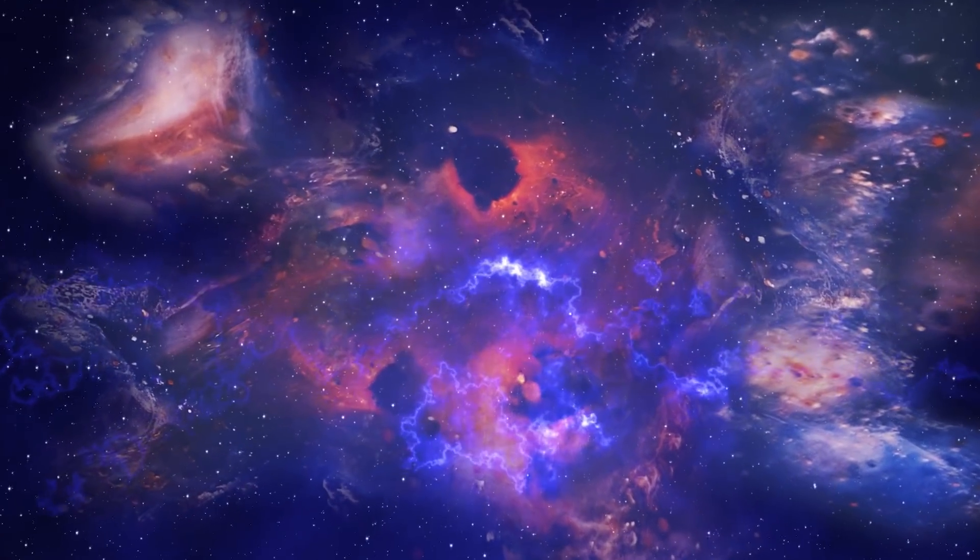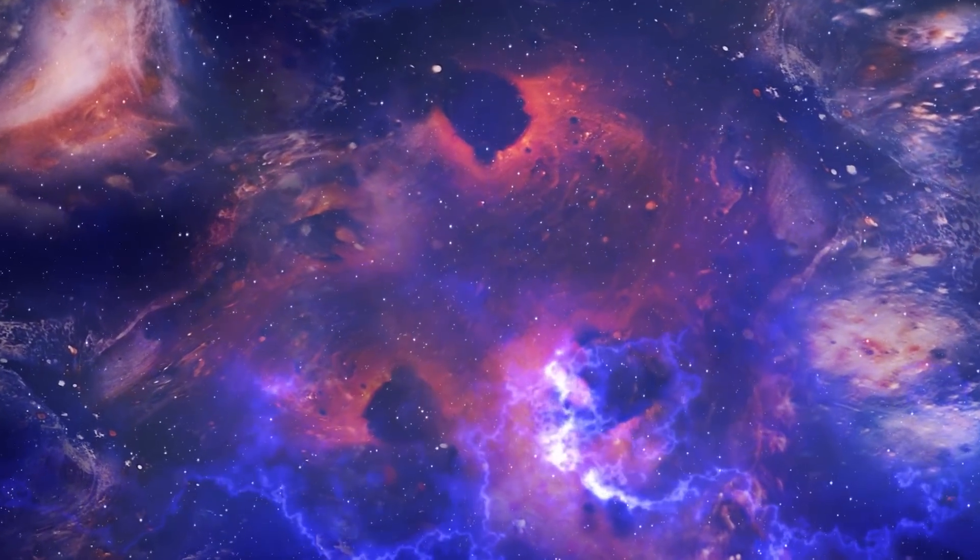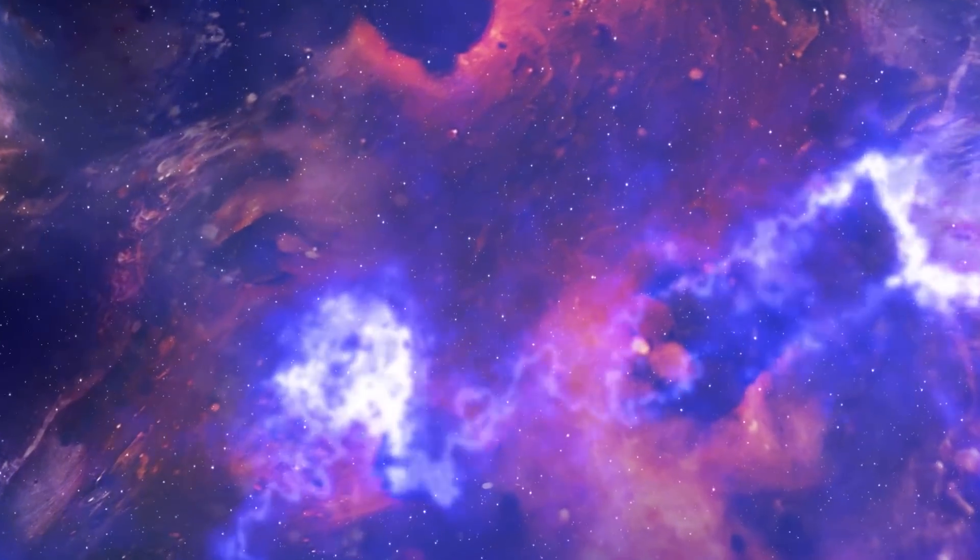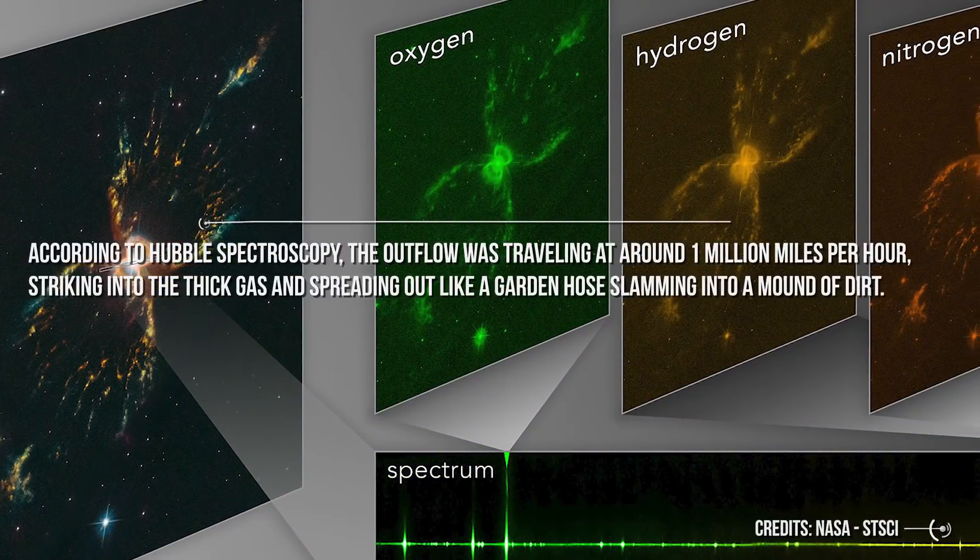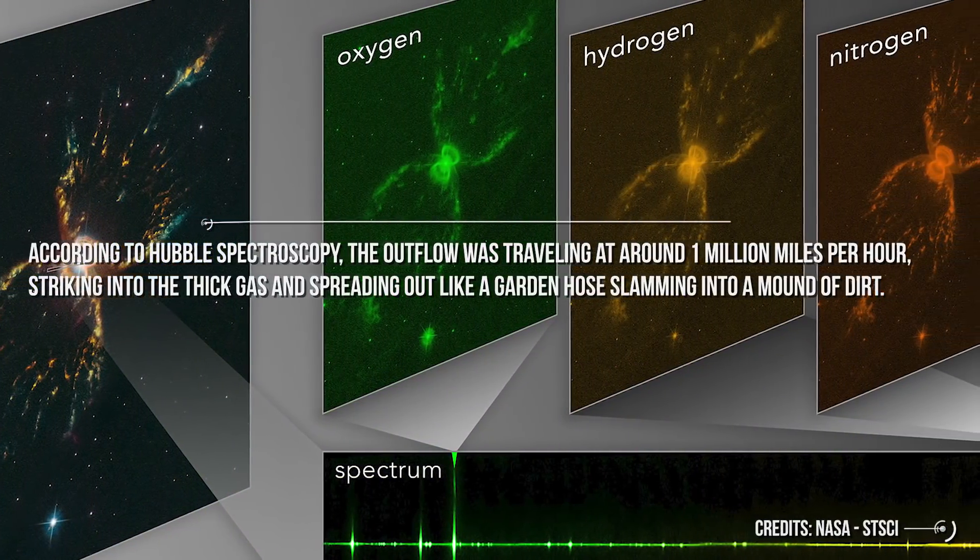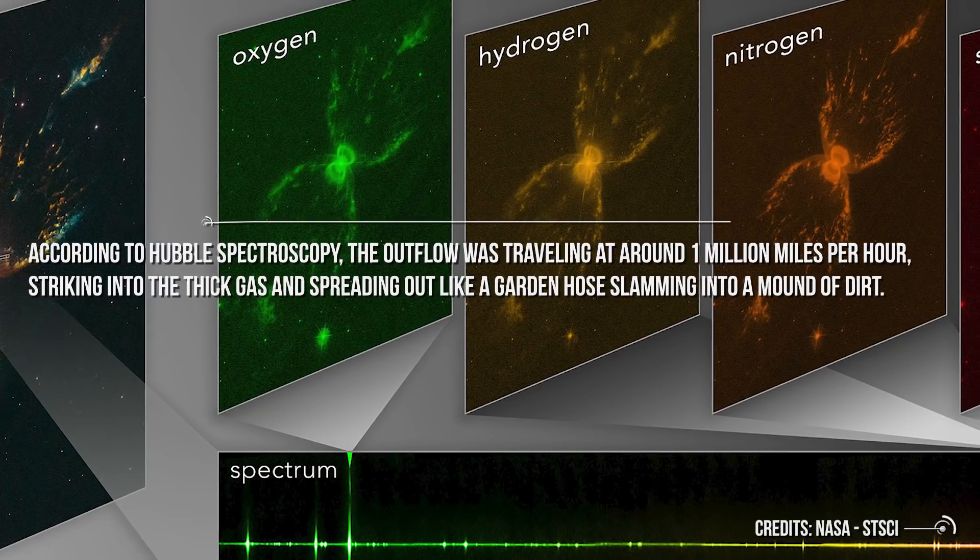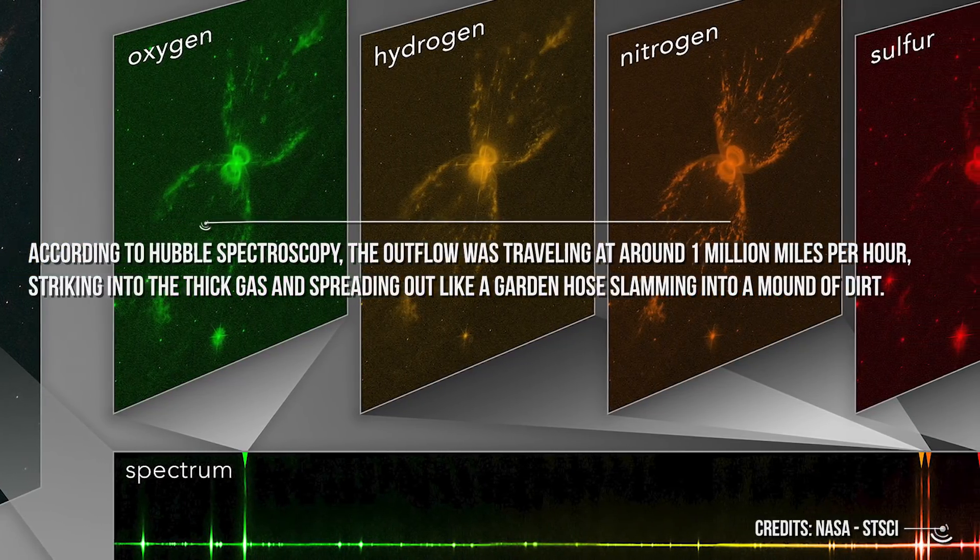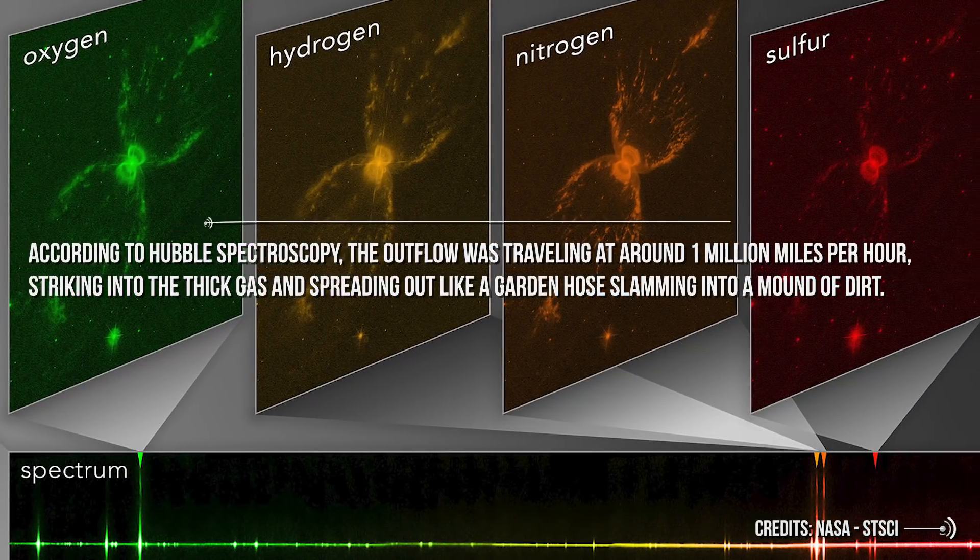That link is a gas outflow spanning across space like an umbilical cord to a brilliant star nursery. When the low-velocity outflow came, the region already had a thick cocoon of gas. According to Hubble Spectroscopy, the outflow was traveling at around 1 million miles per hour, hitting into the thick gas and spreading out like a garden hose slamming into a mound of dirt.